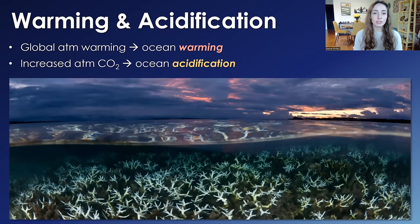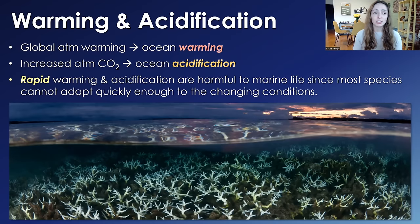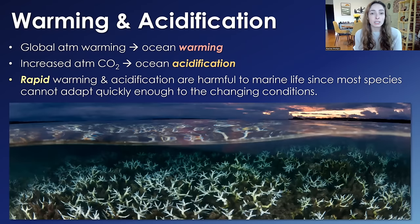Increased CO2 causes ocean acidification — the lowering of ocean pH. These two effects, warming and acidification, are not only occurring but are occurring at a rapid rate, which is really harmful to marine life since most species cannot adapt quickly enough to keep up. This is true of any rapidly changing conditions in Earth's history. Rapid change on geologic timescales means life doesn't adapt in time. That's why mass extinctions, like the Big Five or the current Sixth, are driven by rapid change, not necessarily the magnitude of change.